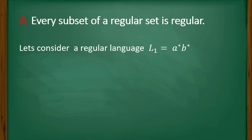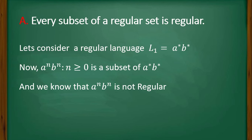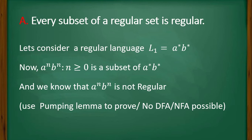Option A states every subset of a regular set is regular. Consider language L1 = a*b*, meaning any number of a's followed by any number of b's — this is a regular language. Now, a^n b^n, meaning n a's followed by n b's, is a subset of a*b*. However, a^n b^n is not a regular language — we can prove it using the pumping lemma or by showing no NFA or DFA exists for it. So option A is false.